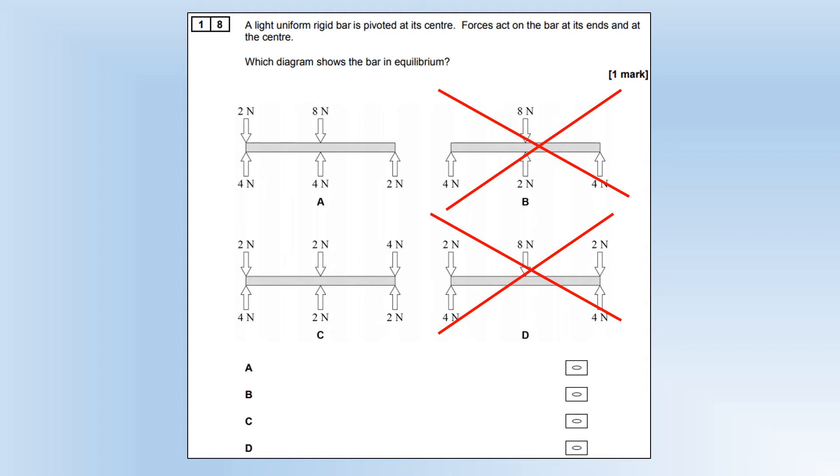But A and C both have a resultant force of zero. Now we need to look for the one where the moments are balanced. The only one where the moments are balanced is A, because the two Newton forces form a couple, which has the same moment as that four Newton force in the opposite direction. So that would be in equilibrium.